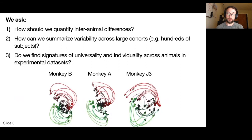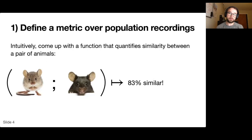At a high level, when we talk about quantifying differences across animals, what we really want is to come up with a function that takes in a pair of individual animals and spits out a similarity score or a distance score.